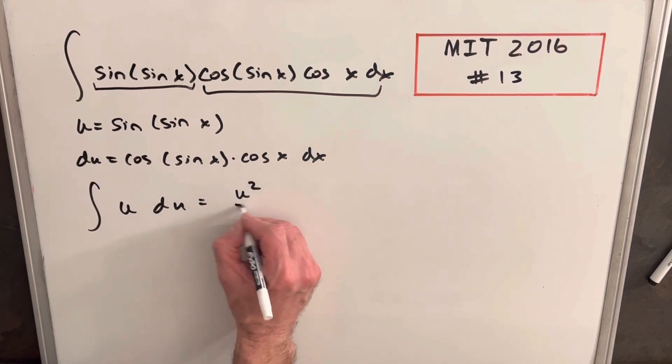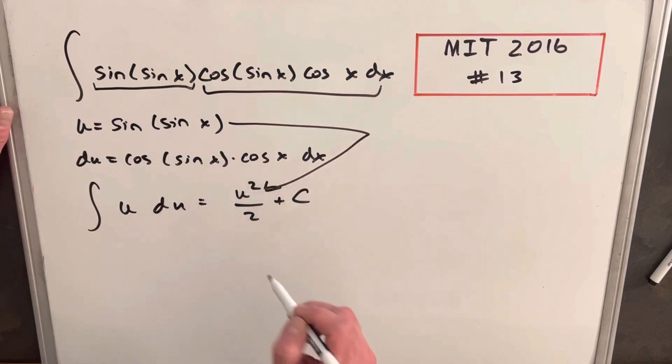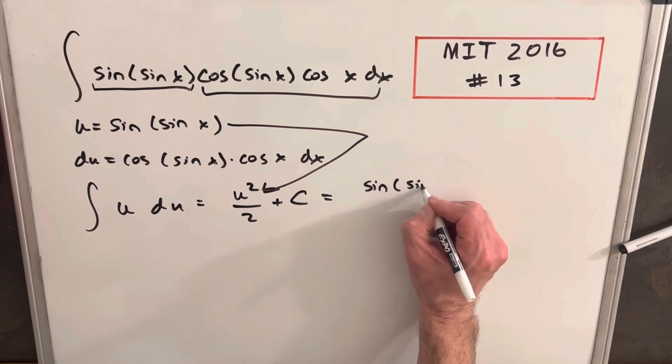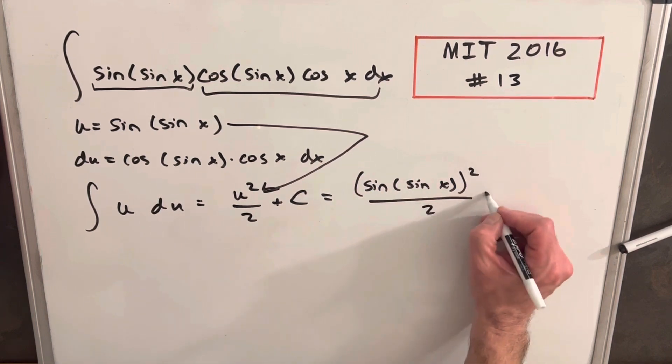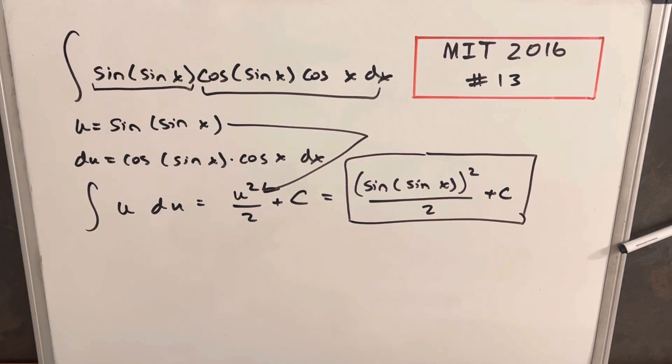I'm going to back substitute like I always do. So then for our final answer we just have sin(sin x) all squared over 2 plus c. That's it, that's our answer.